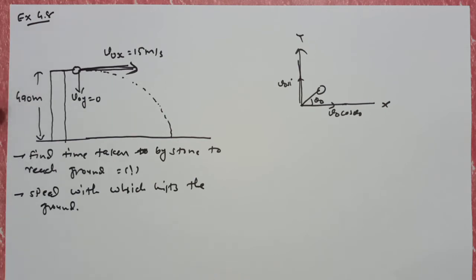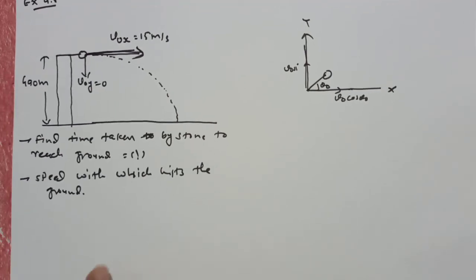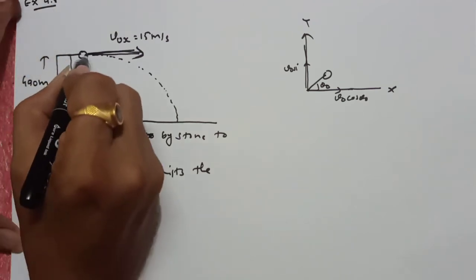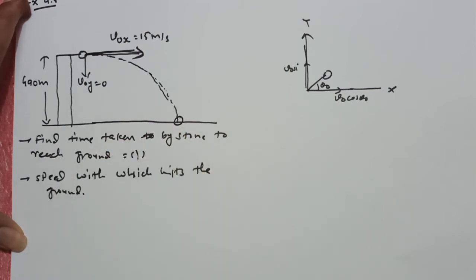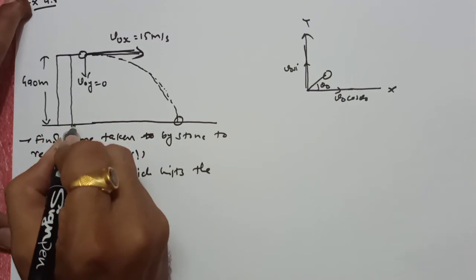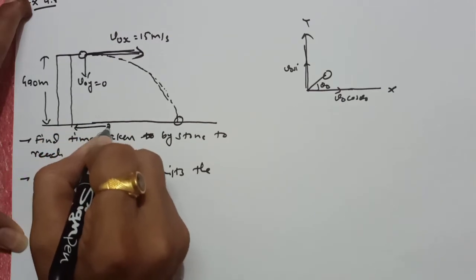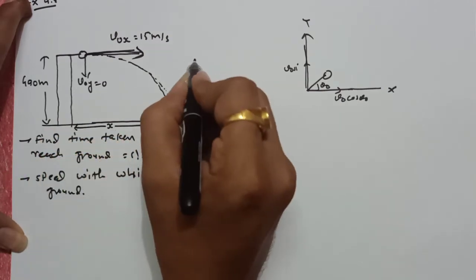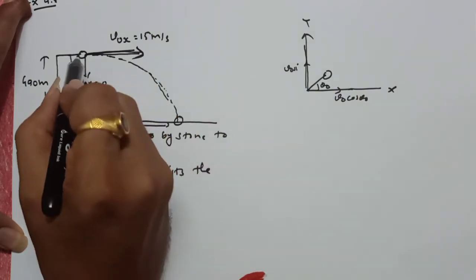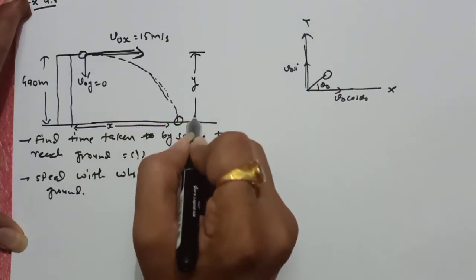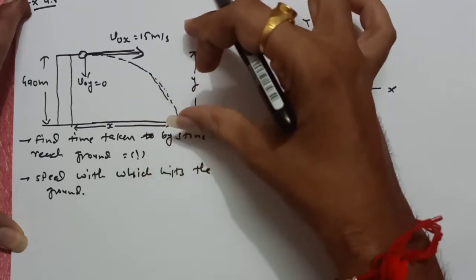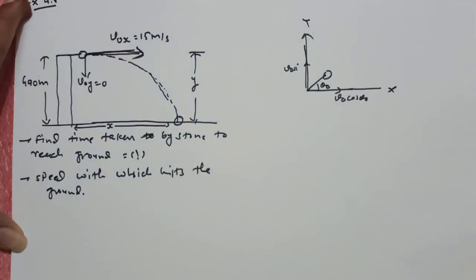अब देखो, हमारा जो object है वो यहाँ से motion करता करता यहाँ पर गिरेगा। So in that case हमारा जो stone है वो दो type के distance cover करेगा — एक distance cover होगा x-axis का, और एक distance cover हुआ है यहाँ से लेके यहाँ तक का y-axis का। और वो y-axis का distance हमें पता है: 490 meters।